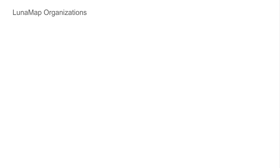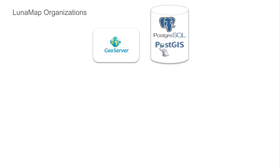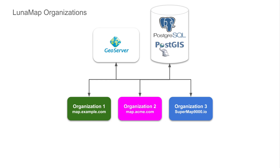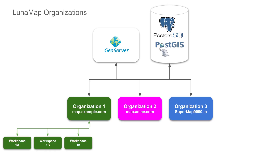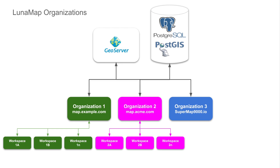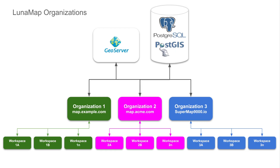This is what a typical setup looks like for an enterprise client: you have your own GeoServer, Postgres, and PostGIS that sits on top of your Luna GeoServer. With that, we create three organizations. Organization one gets map.example.com, organization two gets map.acme.com, and organization three gets supermap9000.io — completely different, completely isolated. For each organization, we're able to create an unlimited number of workspaces. By having these different organizations, you're able to really isolate your data and create something that's very unique for each one of your deployments.